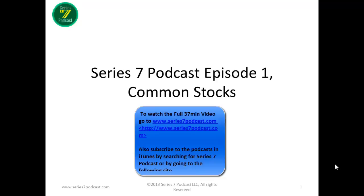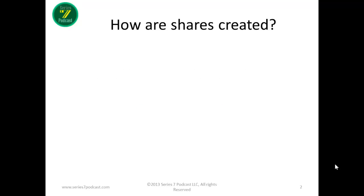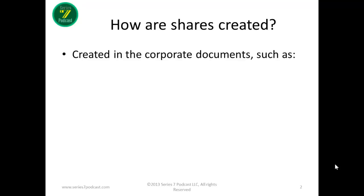First of all, how do we create common stock? Common stock is an institution that is formed through the creation of a corporation. In the United States, a corporation is considered an entity, almost with all the powers of an individual, with the exception that it doesn't have the power to vote and it can't be thrown in prison. Corporations are formed by public charter, and in order to form a corporation, they first need to create the corporate documents — the Articles of Incorporation. The Articles of Incorporation will set out who the organizers are, what the company is going to do, and various other aspects.